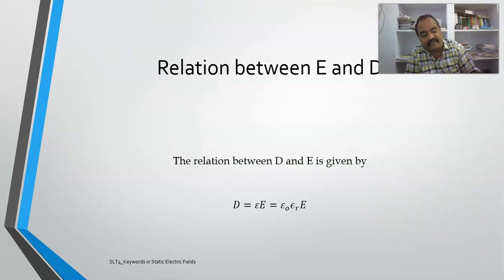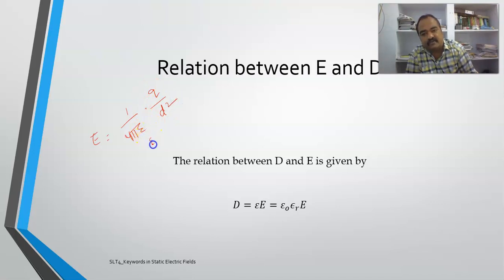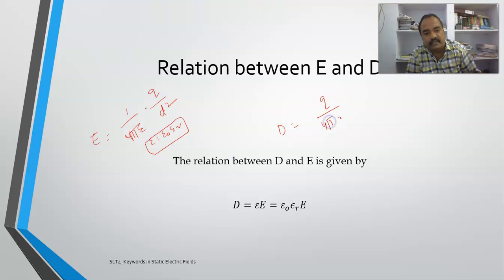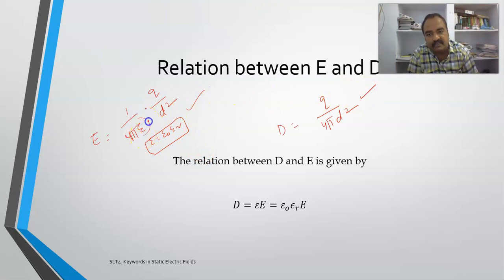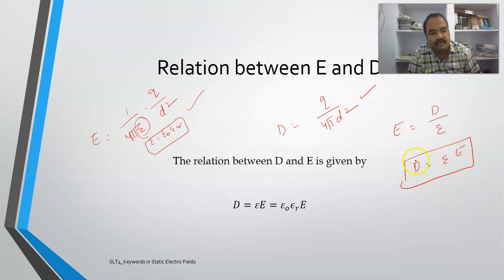Now, what is the relation between E and D? Electric field intensity E = (1 / 4πε₀) × (Q/d²), where ε₀ can be written as ε₀ × εᵣ. Electric flux density D = Q / (4πd²). The only difference between the two equations is the ε factor. Therefore, E = D/ε, or equivalently, D = εE. Both are vectors. This is the relation between electric flux density and electric field intensity.